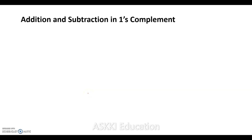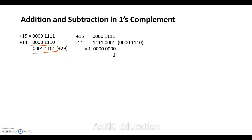For addition and subtraction in one's complement notation, there is a slight variation. For example, +15 and +14 — both are positive numbers. In one's complement notation, positive numbers have no transformation, so we simply add the magnitudes to get the answer, which is +29.